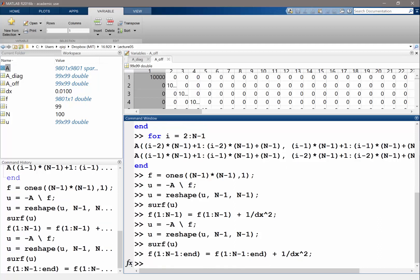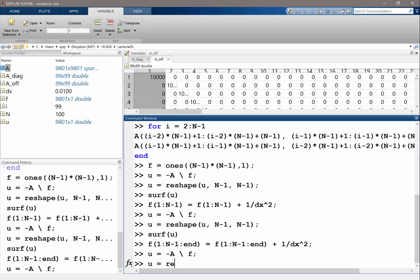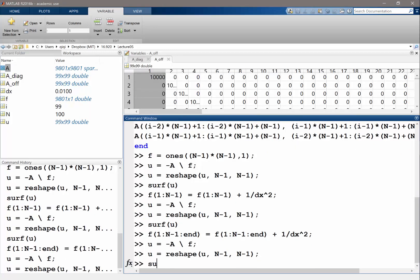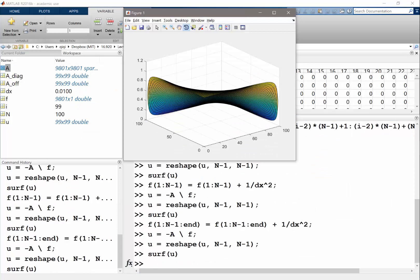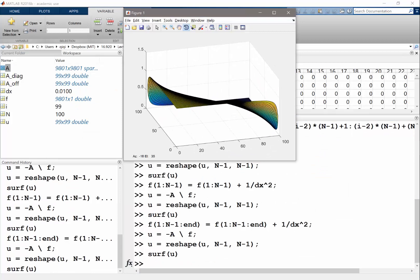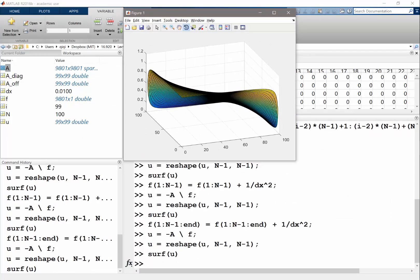Then if I do u equal to minus this again, you could reshape - oh I didn't plot it. Then you get two boundaries that are equal to 1 - this boundary and this boundary equal to 1. The other two boundaries are equal to 0. So that's how you treat boundary conditions.